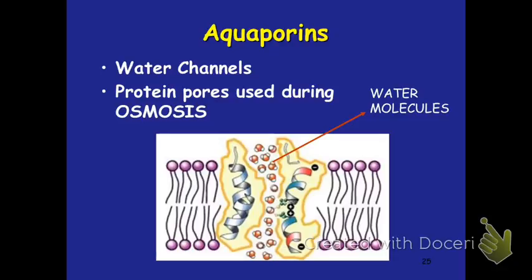In our cell membranes, we have aquaporins — special proteins designed just to help water move across the membrane quickly and effectively. These protein pores are going to be used during osmosis.